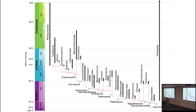Sauropodomorphs are either the first branch to come off under the Ornithoscelida hypothesis, or the sister group to Ornithischia under the very much minority and less well-supported phytodinosauria hypothesis. The standard model is that sauropodomorphs are the sister group to theropods, the carnivorous dinosaurs, collectively in the group Saurischia — and those two are more closely related to each other than either are to basal branches like herrerasaurs.